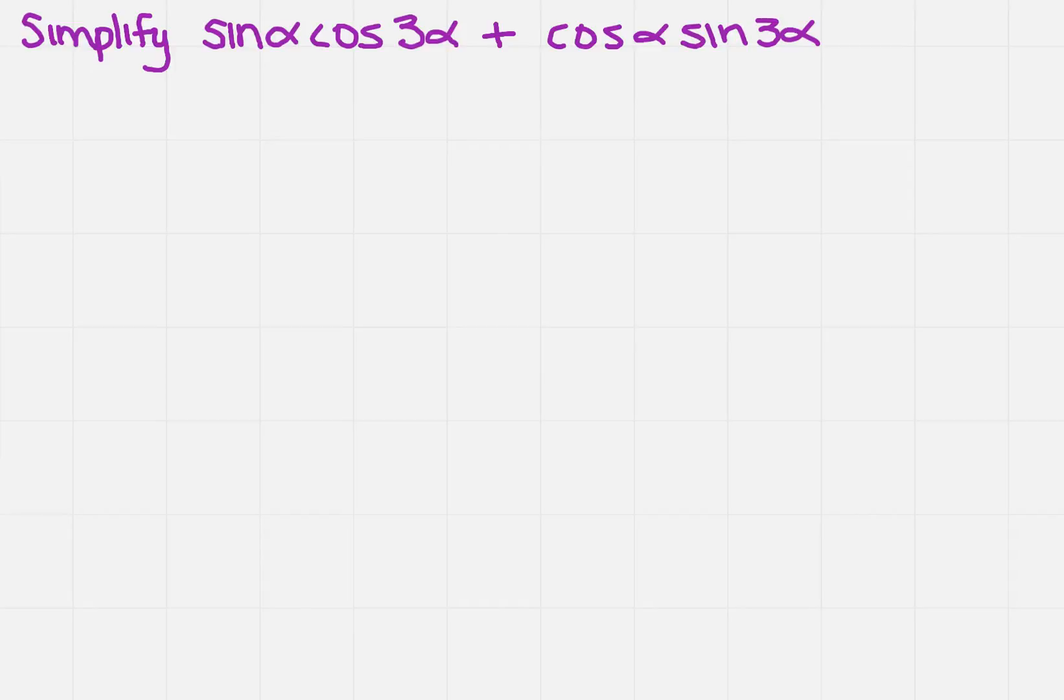Simplify sine alpha cosine 3 alpha plus cosine alpha sine 3 alpha. So when I first look at this, I notice that it really resembles one of the rules that I've already studied. Now, which one is that? That's going to be the sine of a sum identity.